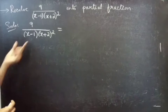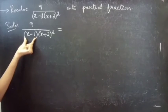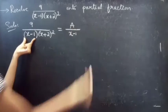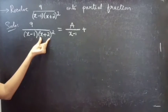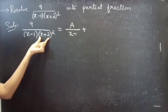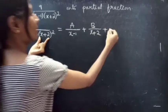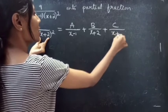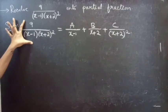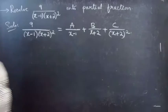We are given denominator (x minus 1) into (x plus 2) whole square. For (x minus 1) we will get one fraction with denominator (x minus 1). For (x plus 2) whole square you will be getting two fractions — one for (x plus 2) and the other for (x plus 2) whole square. So you could express it as A by (x minus 1) plus B by (x plus 2) plus C by (x plus 2) whole square.